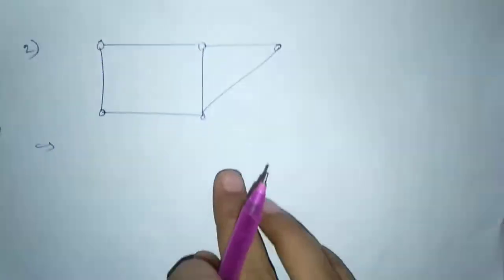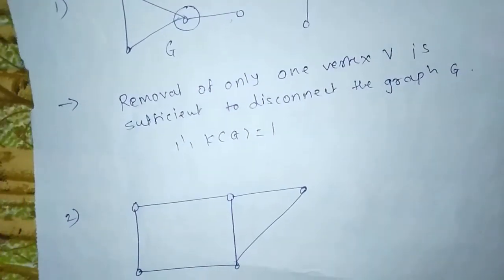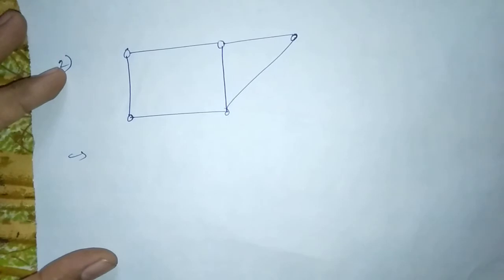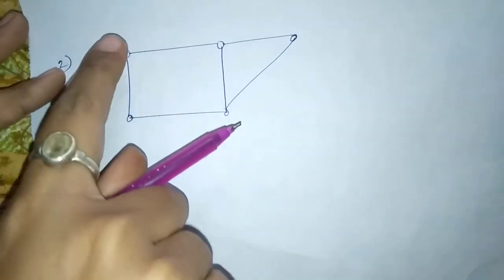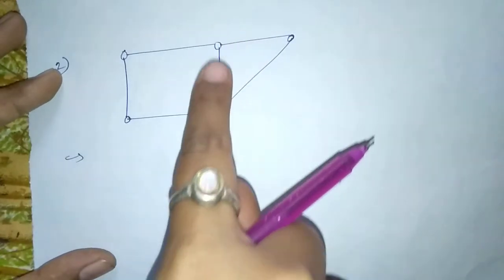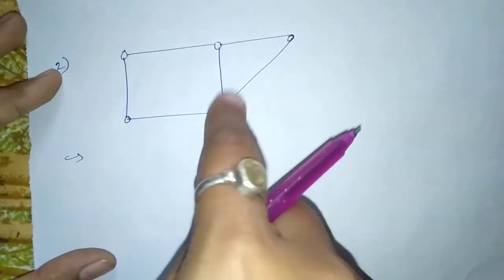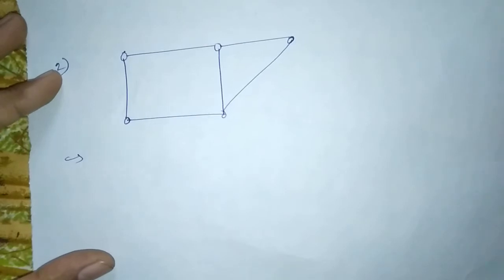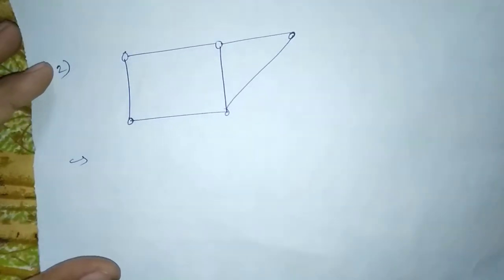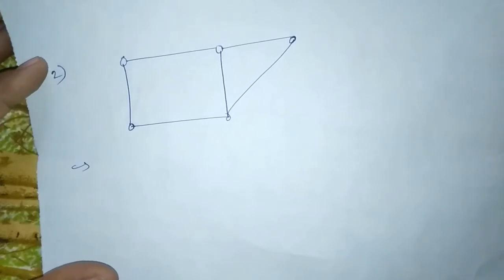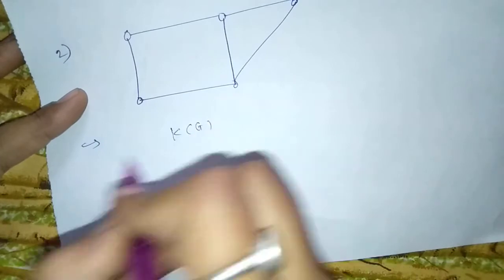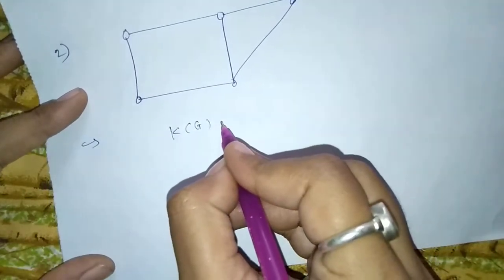Now, consider this graph. Here you can see that if you delete these two vertices you get a disconnected graph. So, vertex connectivity is equal to 2.